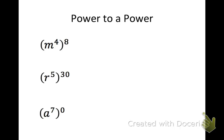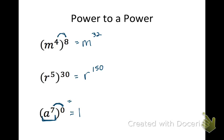Here we have power to a power, so we're multiplying. 4 times 8 gives x to the 32nd. Next, 5 times 30 gives r to the 150th. For the last one, some quantity all raised to the zero — we can just say that's 1 right away. Or if you like, multiply out the exponents to get a to the zero, which is still 1.